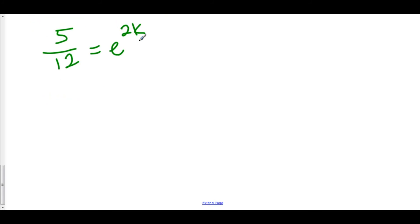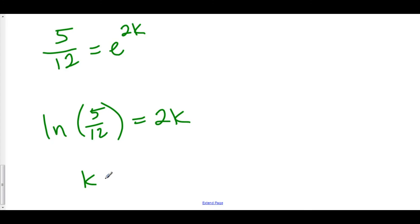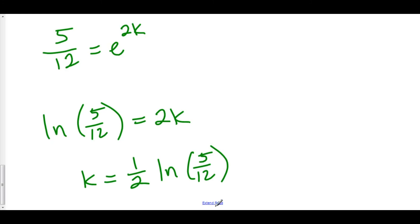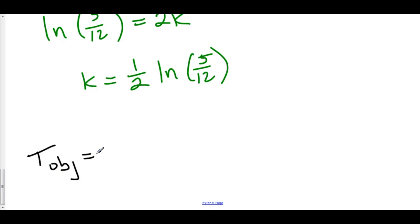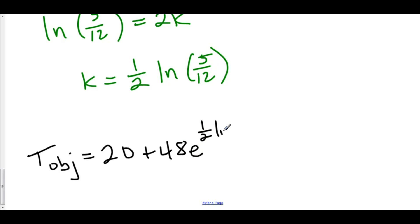To solve for k, we take the natural log of both sides. The natural log of 5/12 — which is negative because 5/12 is a fraction between 0 and 1 — equals 2k. So k equals one-half times the natural log of 5 over 12. We can now plug this into our function: T-object equals 20 plus 48·e to the (1/2)·ln(5/12)·t.